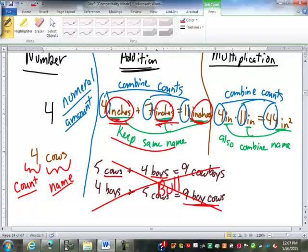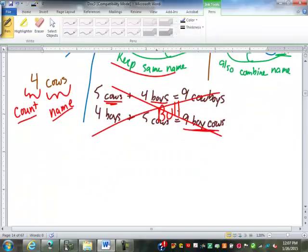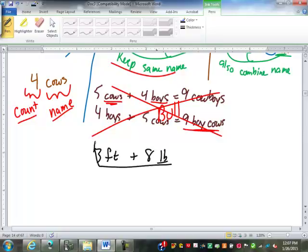I can add inches to inches or cows to cows or boys to boys, but I can't mix and match. On the more practical side, if I had three feet plus eight pounds, I can't combine that. I get three feet and eight pounds. I can't combine those with addition or subtraction because I have to have the same name to add or subtract numbers.